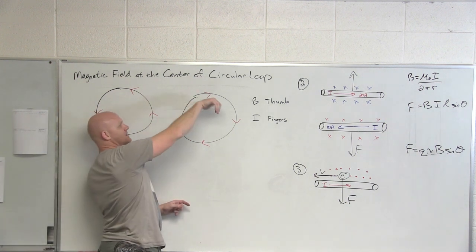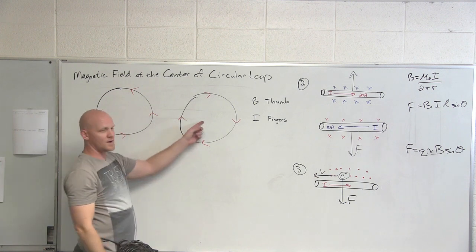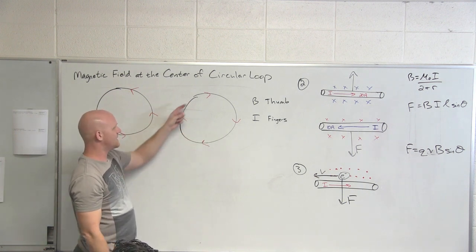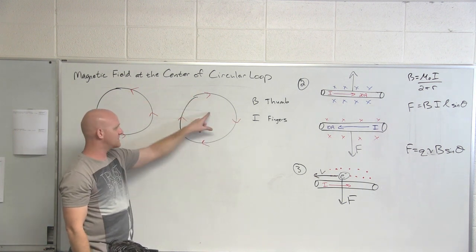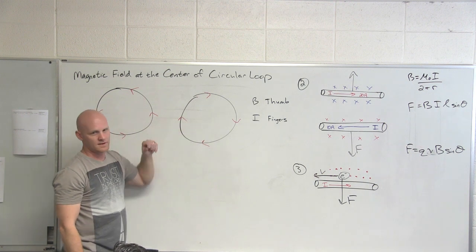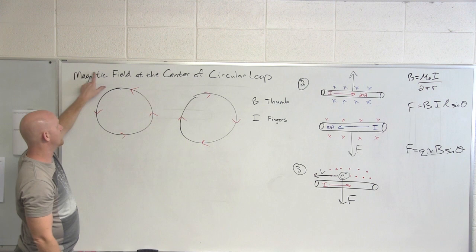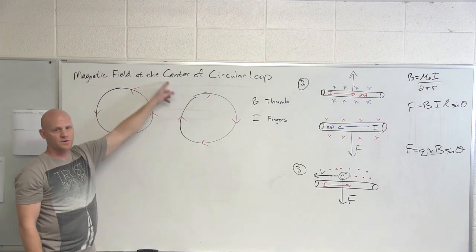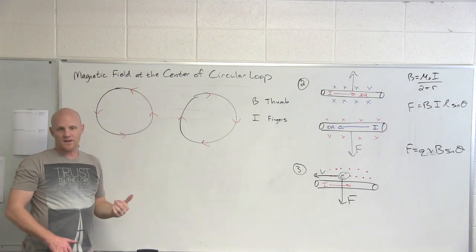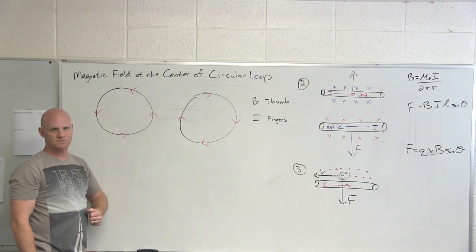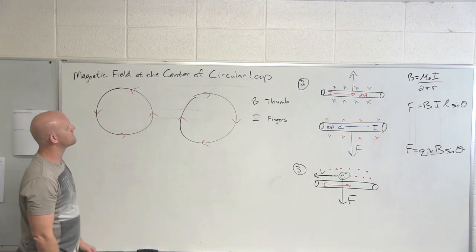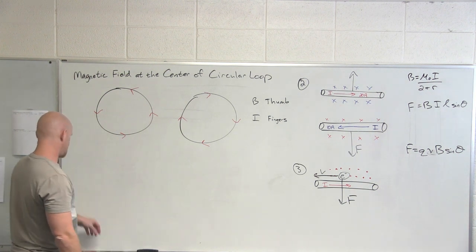If we do it the other way, your thumb would point in. So for clockwise, if we do the same exact thing we did at every single point around the circle, we find out that at the center everywhere it points in. Notice we've only talked about the magnetic field at the center. Around the outside of the circle we've ignored it completely and it's usually not something we talk about.